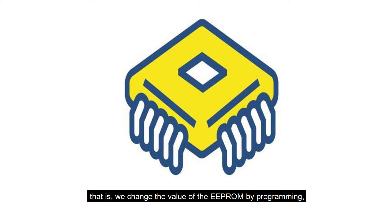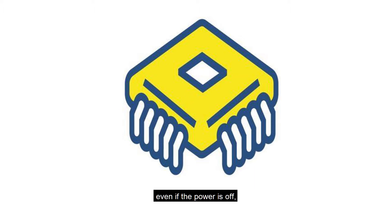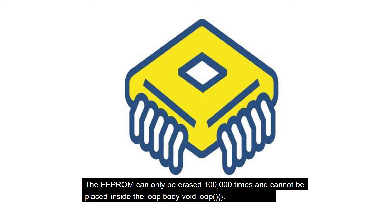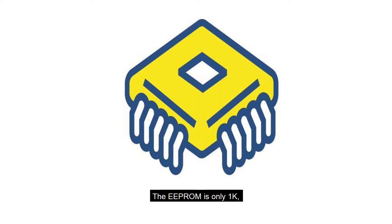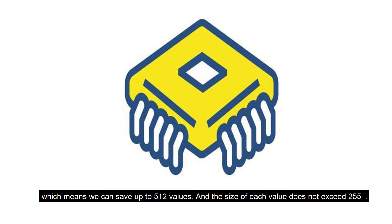With EEPROM, we can change the value by programming and even if the power is off, the data won't be lost. EEPROM can only be erased 100,000 times and cannot be placed inside the loop body. The EEPROM is only one kilobyte and has 512 addresses, which means we can save up to 512 values, and the size of each value does not exceed 255.